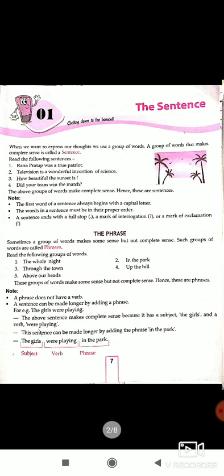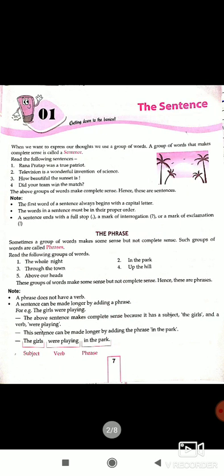First, I will tell you about the sentence. When we want to express our thoughts, we use a group of words. A group of words that makes complete sense is called a sentence. For example: 'Rana Pratap was a true patriot,' 'Television is a wonderful invention of science,' 'How beautifully the sunset is,' 'Did your team win the match?' These groups of words make complete sense, hence these are sentences.